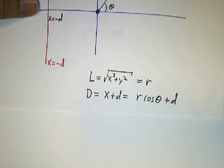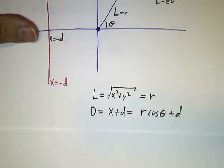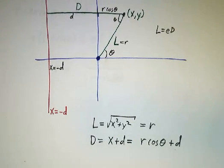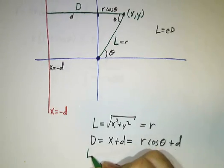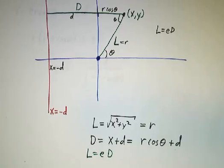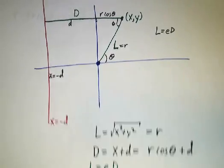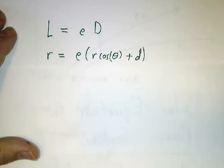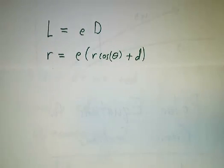So we have that l is equal to r, and d is r cosine theta plus d. And of course, you remember that the equations for all of our conic sections is that l should be e times d. And we said that l was r, and d was r cosine theta plus little d.